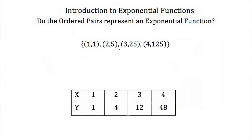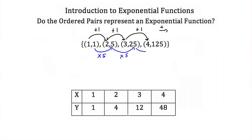Now let's look at ordered pairs and determine if they represent an exponential function. We have (1,1), (2,5), (3,25), and (4,125). The x values increase by adding 1 each time — that's constant. The y values go from 1 to 5 (multiply by 5), 5 to 25 (multiply by 5), 25 to 125 (multiply by 5) — increasing by multiplication at a constant rate. So this does represent an exponential function.